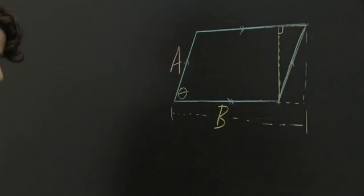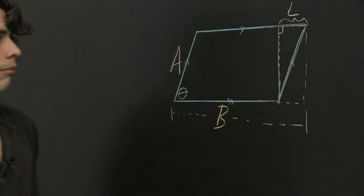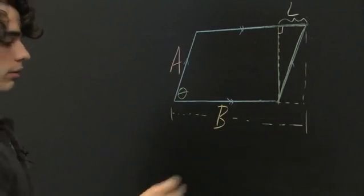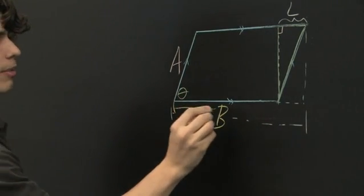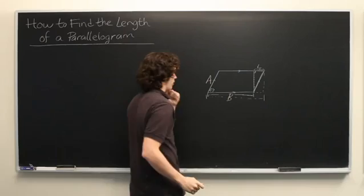And if we can determine the length of this segment here, which we'll call l, then we can simply add l to b and we're good to go. Let's recall that b is the base of the parallelogram itself, not of the entire area that we're looking for.